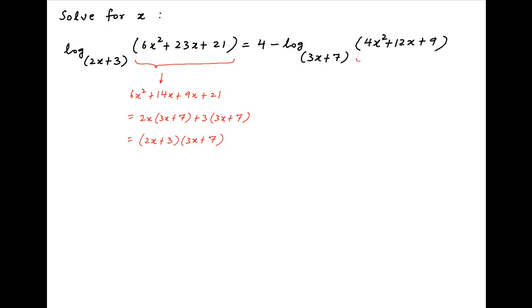On the right hand side, 4x squared plus 12x plus 9 is equal to (2x plus 3) whole square.